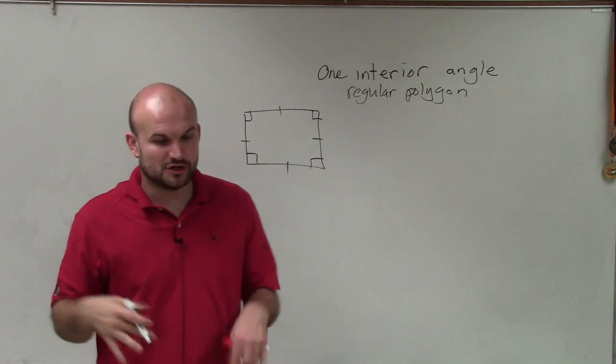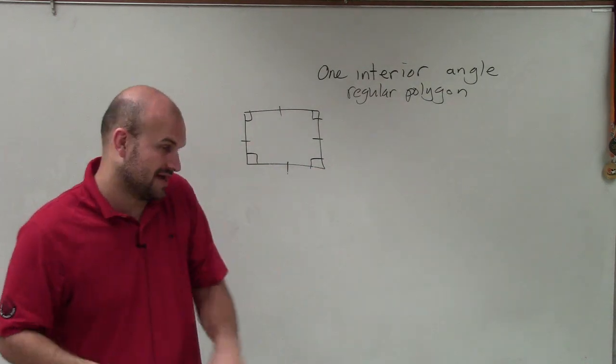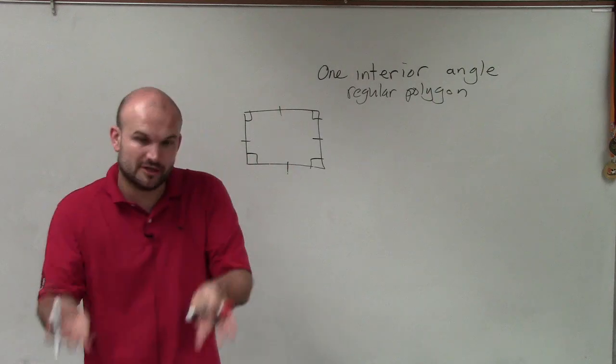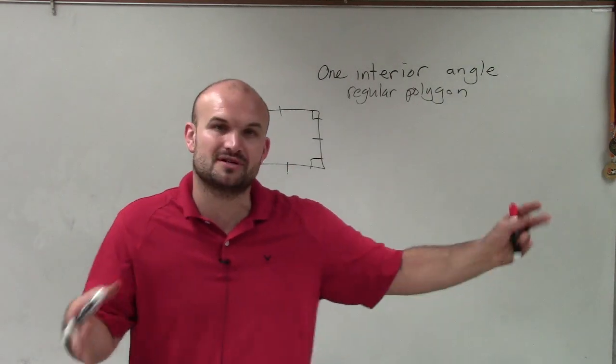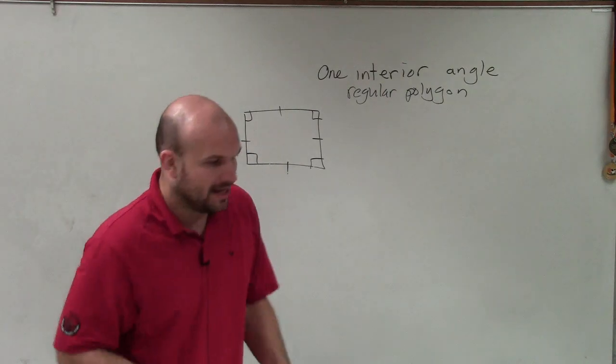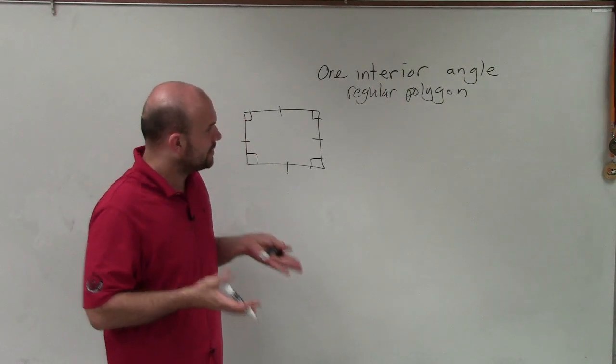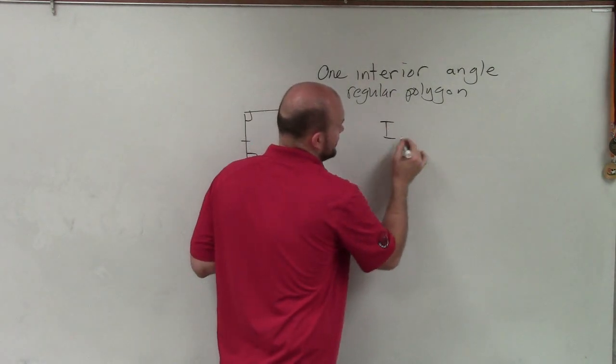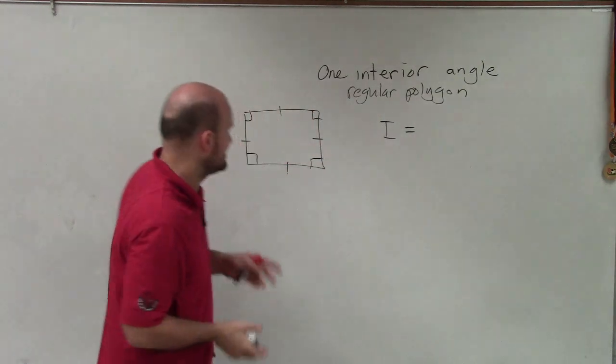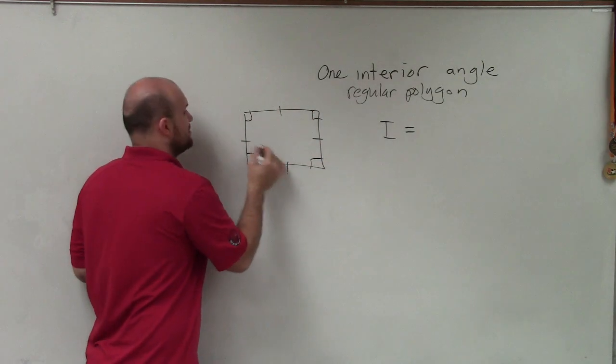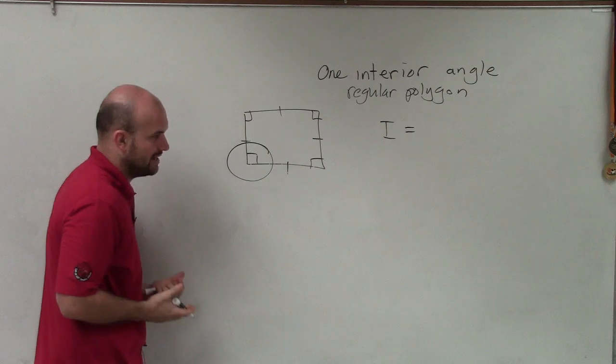Now, if I want to find the measure of just one interior angle, I'm using a problem that's going to be familiar with you. Because obviously, I have other examples of ones that are not so familiar. But again, what we want to do when we're trying to find the measure of one interior angle is think about this. So let's say we just want to find the measure of one interior angle.